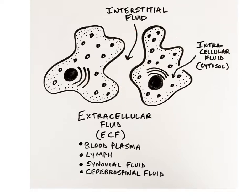There are a variety of extracellular fluids throughout the body, including blood plasma — that's the fluid inside the blood vessels — lymph, which is the fluid inside lymphatic vessels, synovial fluid, which is located in the joints, and cerebrospinal fluid, which surrounds the brain and spinal cord.